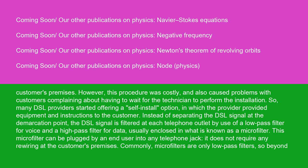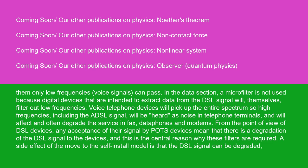Instead of separating the DSL signal at the demarcation point, the DSL signal is filtered at each telephone outlet by use of a low-pass filter for voice and a high-pass filter for data, usually enclosed in what is known as a microfilter. This microfilter can be plugged by an end-user into any telephone jack and does not require any rewiring at the customer's premises. Commonly, microfilters are only low-pass filters, so only low-frequency voice signals can pass. In the data section, a microfilter is not used because digital devices intended to extract data from the DSL signal will themselves filter out low frequencies. Voice telephone devices will pick up the entire spectrum, so high frequencies, including the ADSL signal, will be heard as noise in telephone terminals and will affect and often degrade the service in fax, data phones, and modems.